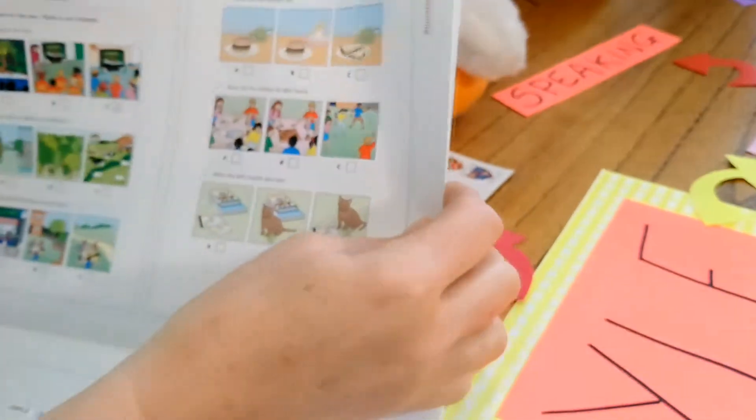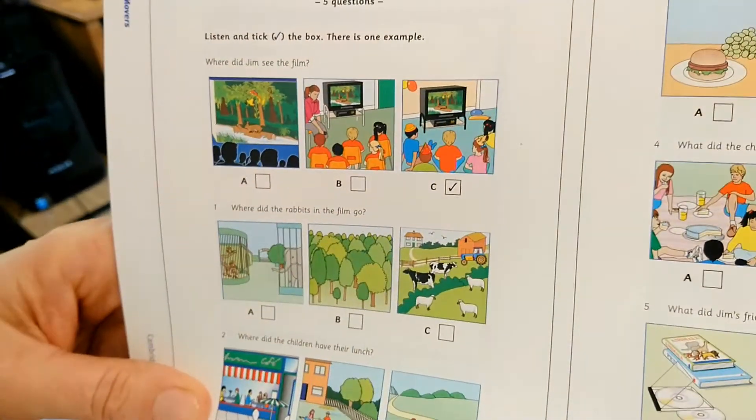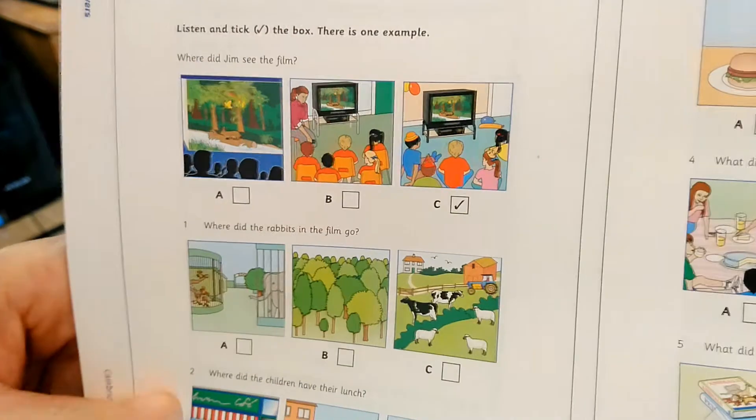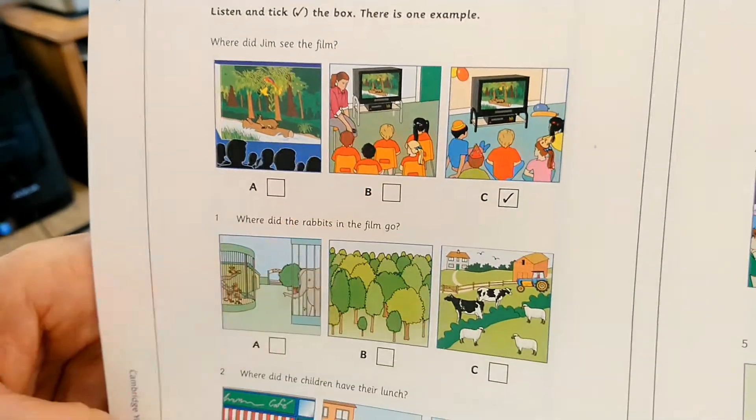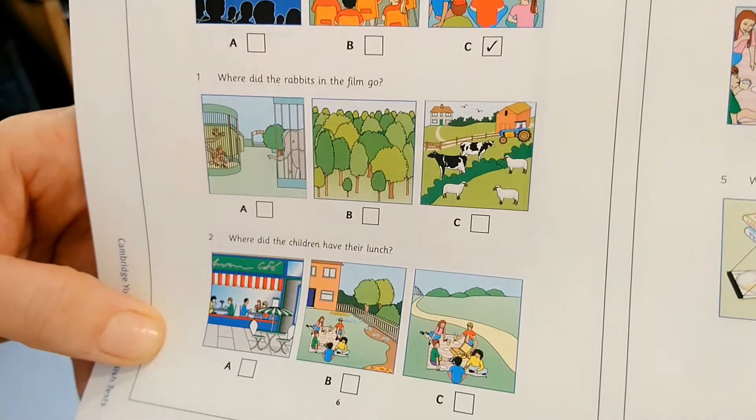Part four. You have to listen and tick. There is one example. You have to answer the questions and just tick the correct picture according to the information you listen.